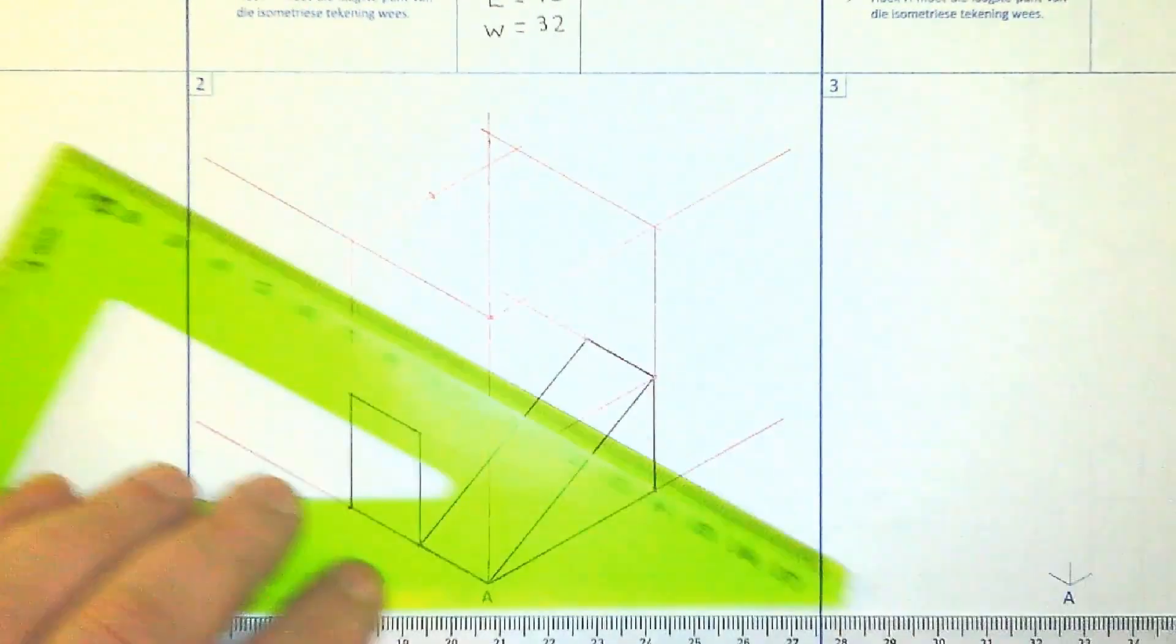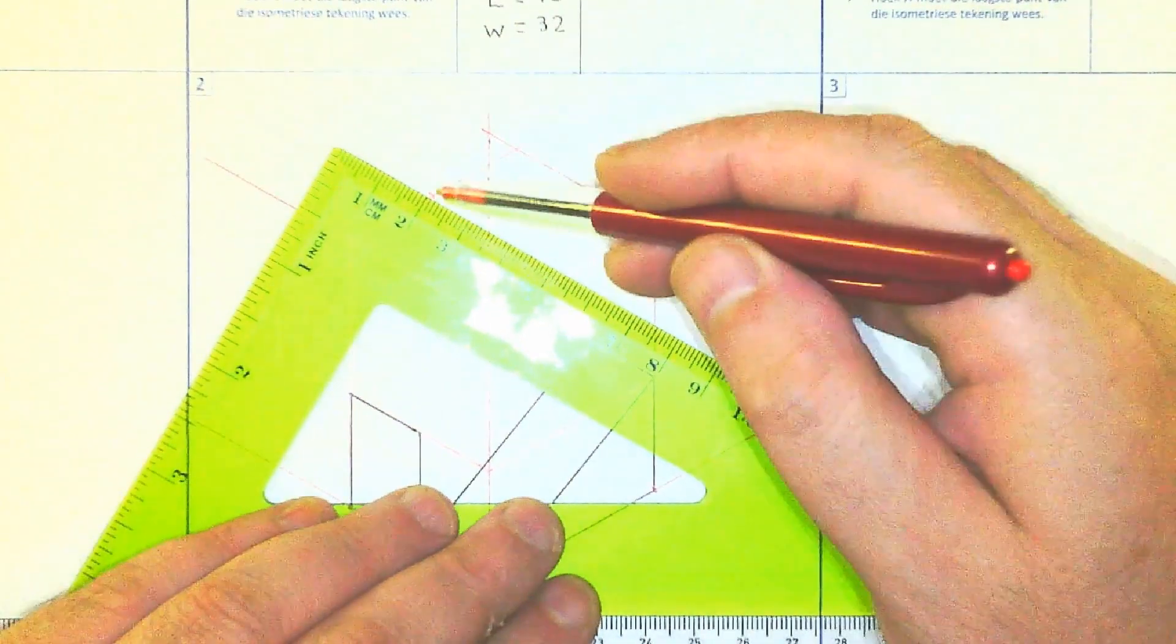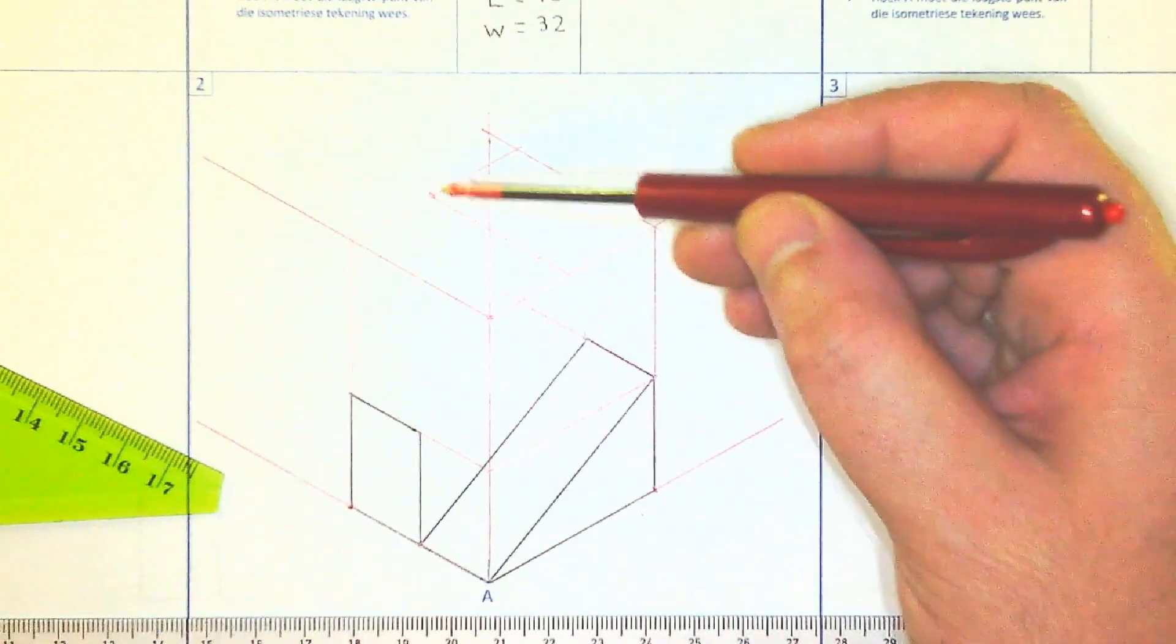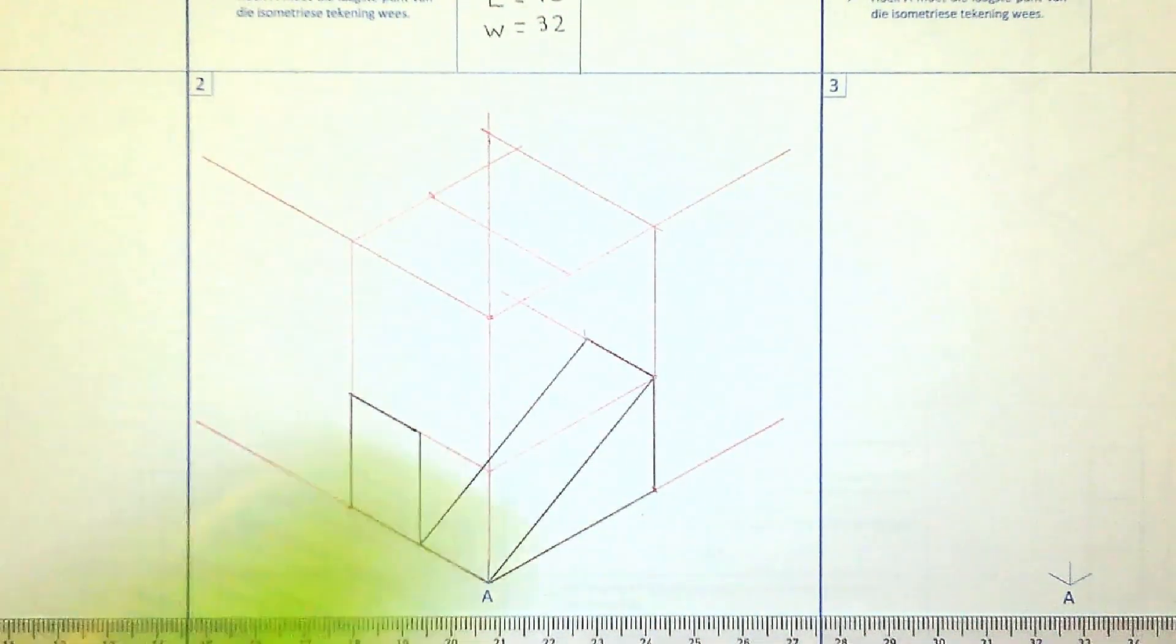And we're going to mark 20 on the edge here. And then again, you take the line in by 30 degrees. You can see there, I've drawn the construction line, the 30 degree line running there. And then to get the width, you can technically measure it, but I'm just going to carry it over.